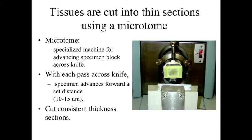Once we've got our tissue within a tissue block in the embedding media, we need to cut it. We use a microtome, which is essentially a fancy deli slicer. It moves our biological specimen across the knife, and with each cycle it advances the specimen a little bit, allowing us to cut relatively thin sections — generally on the order of about 10 to 15 micrometers of consistent thickness — and collect those sections.